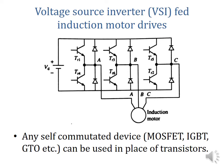This is the basic circuit diagram of a voltage source inverter fed induction motor drive. In this circuit, the input voltage is a DC voltage equal to VD, and it uses six switching devices TR1 to TR6. Instead of using transistors, we can use any other self-commutated devices like MOSFET, IGBT, GTO, etc., depending on the power and voltage level.